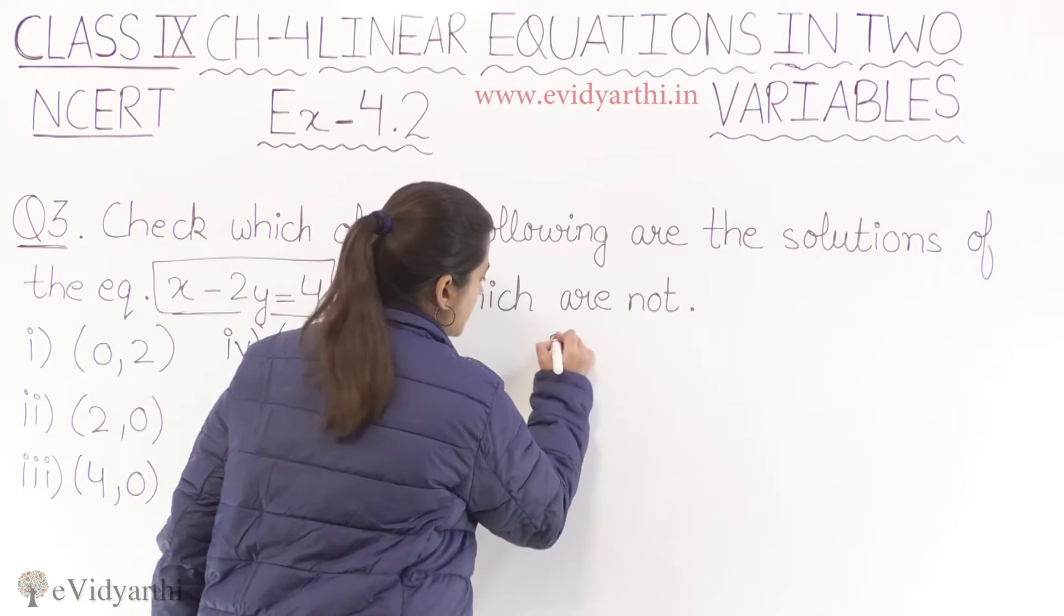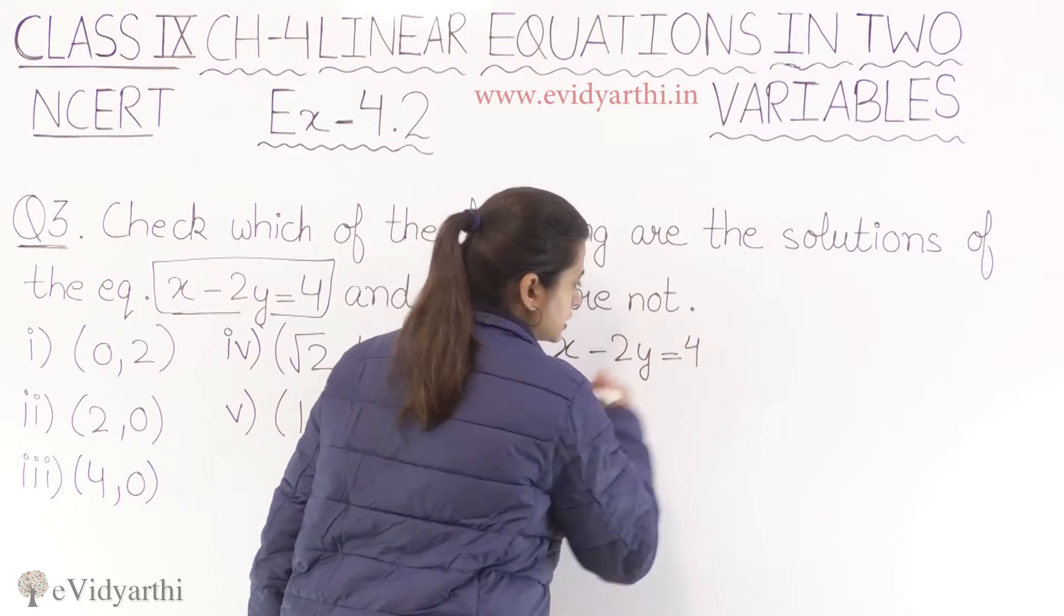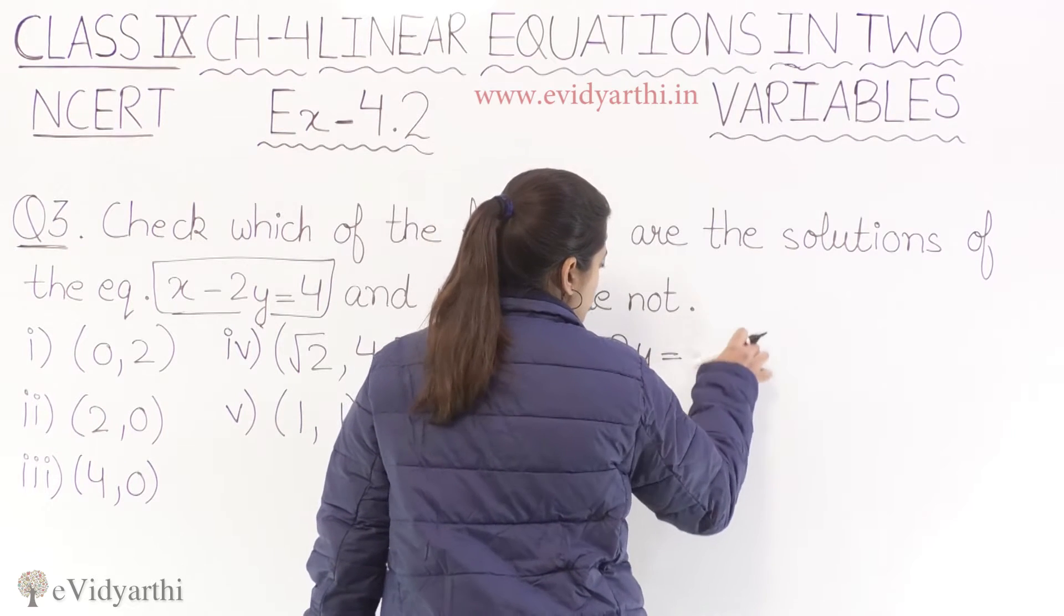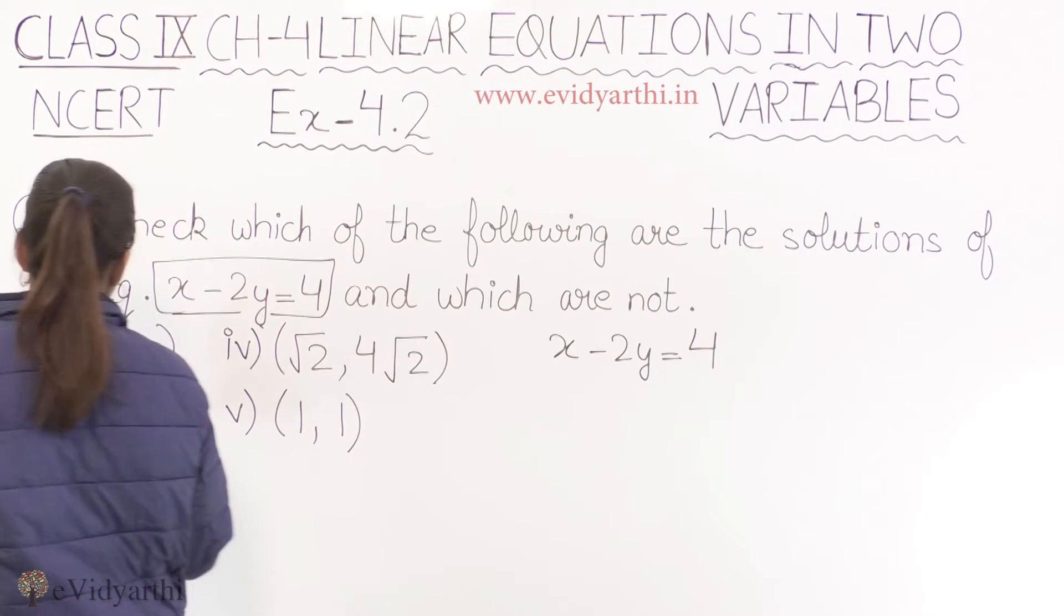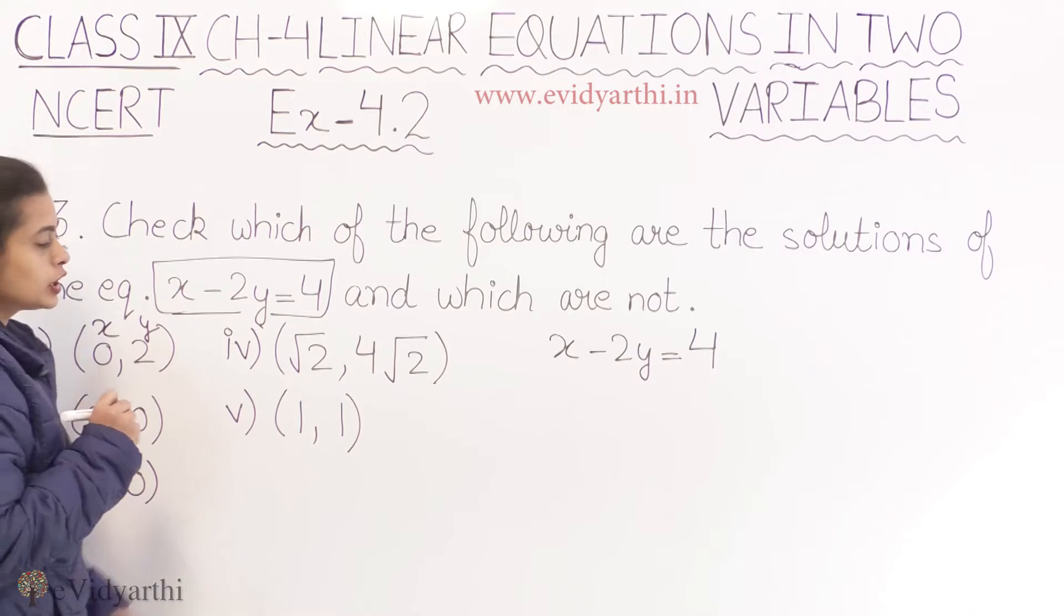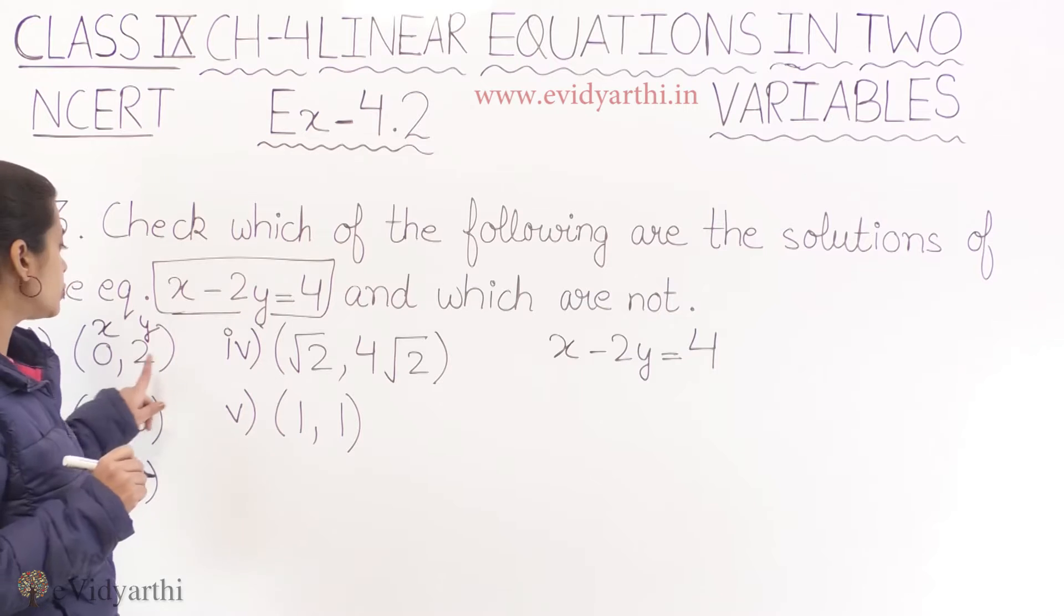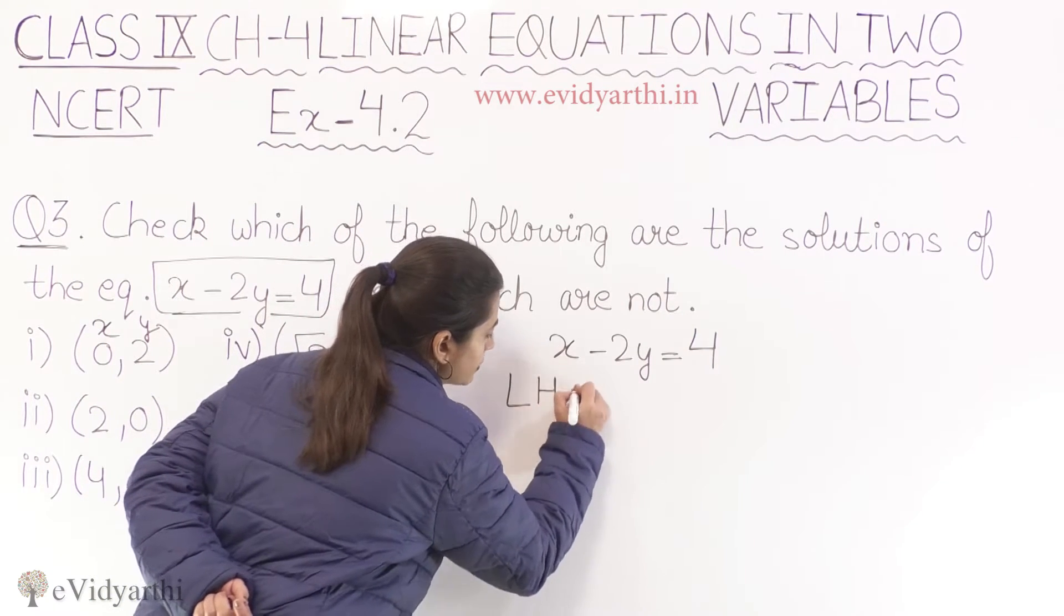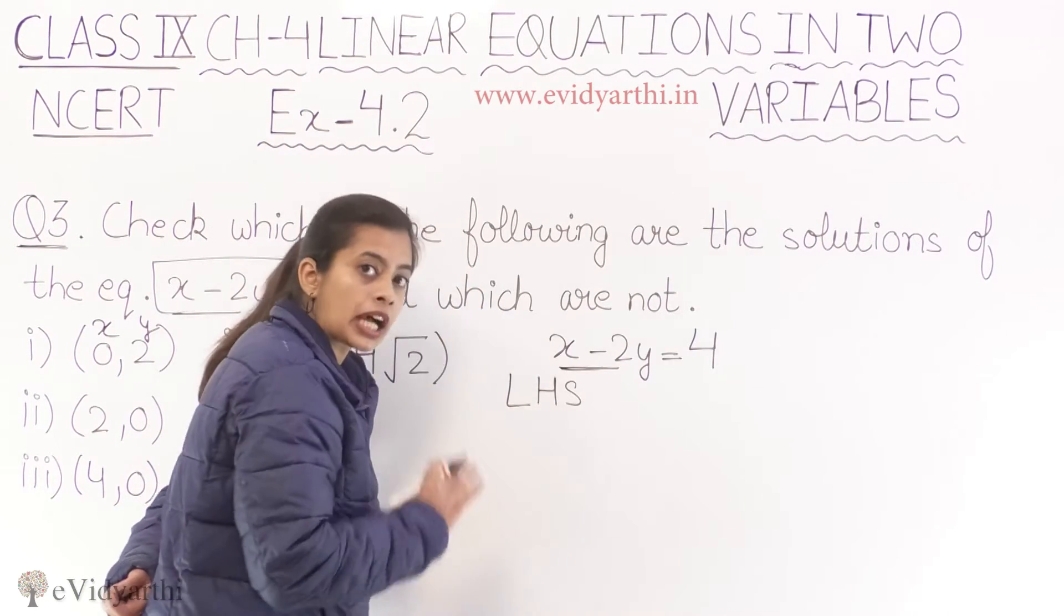What we have as first part? We have zero and two. So basically ordered pair kya deta hai? Pehli value jo aapka hai, wo x ko denote karta hai, or second value y ko denote karta hai. So that means x ka value yahaan per mujhe zero rakhna hai, or y ka value two rakhna hai. Hum apne left hand side ki baat karenge.